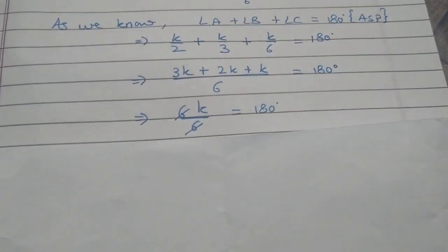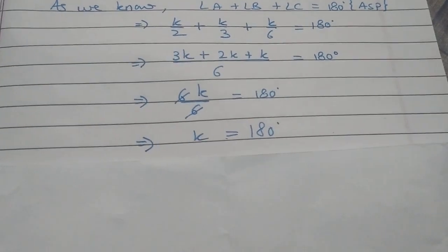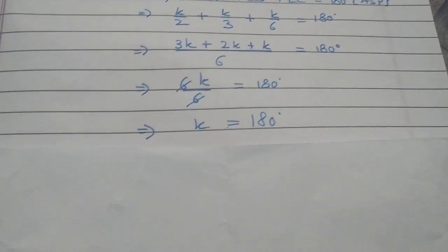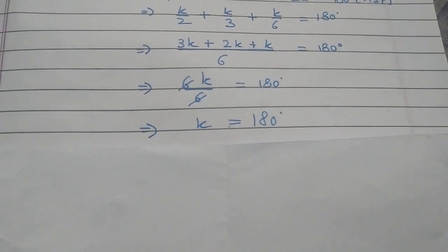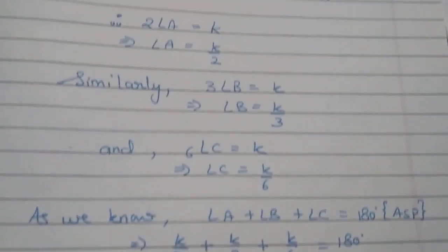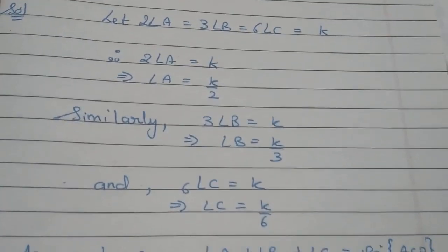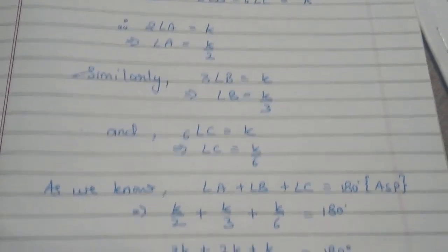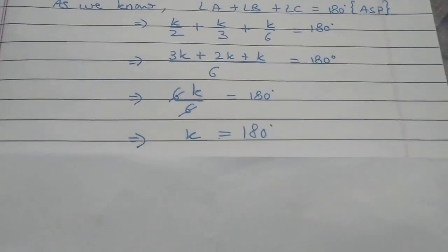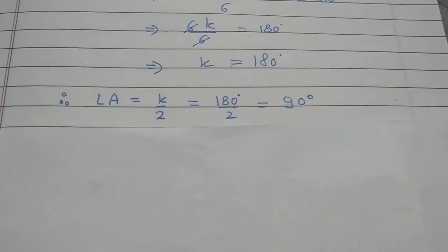So this equals to 180 degrees. The total is 6K upon 6. 6 and 6 cancel, so K equals 180 degrees. Now we substitute K's value back into A, B, C values which were K upon 2, K upon 3 and K upon 6.